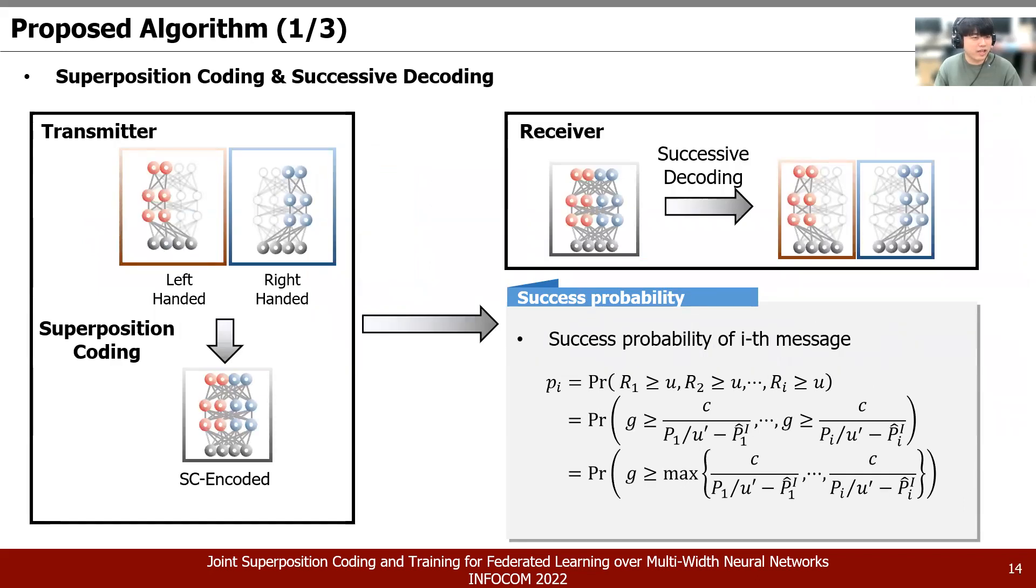We implement these two communication methodologies into our proposed system. In short, we use superposition coding for encoding both left-handed model and right-handed model to transmit these models simultaneously. Then with the successive decoding, the receiver receives the left-hand model and right-hand model together, and they are sequentially decoded depending on the communication situation. So, if the communication status is weak, then only one network, the left-hand model is decoded. If there is a strong communication status, then both left- and right-handed models are received and successively decoded in the devices and the cloud.